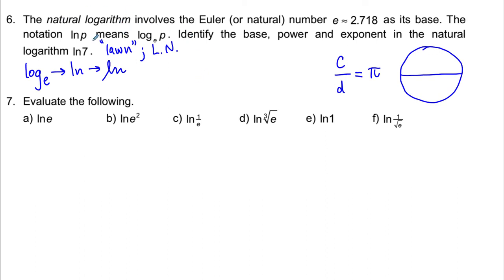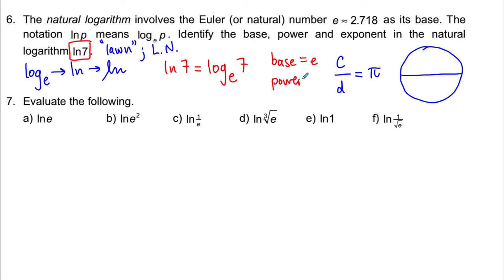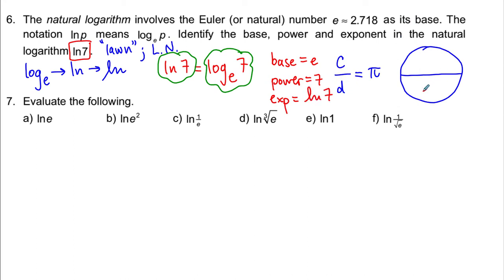When we have ln of 7, we expand it as log base e. The base is e, the power is 7, and the whole expression represents the exponent we put on that base to get that power — so the exponent is ln of 7. This is much like e squared where the base is e, the exponent is 2, and the power is e squared. Since e lies between 2 and 3, e squared lies somewhere between 4 and 9.